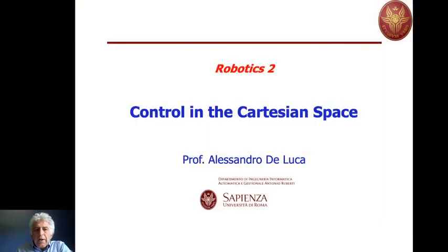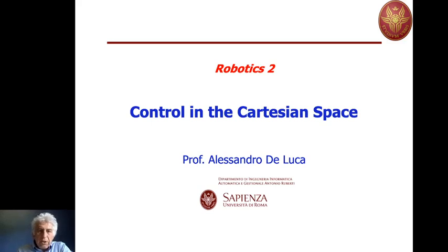Welcome to this Robotics 2 lecture. Today we will consider the problem of controlling the robot motion when the robot motion is driven by the error defined in the Cartesian space, namely at the end-effector level of the robot. So far we have seen a number of control laws, both for regulation and for trajectory tracking in the free space, where the error driving the feedback action was mainly defined at the joint level.